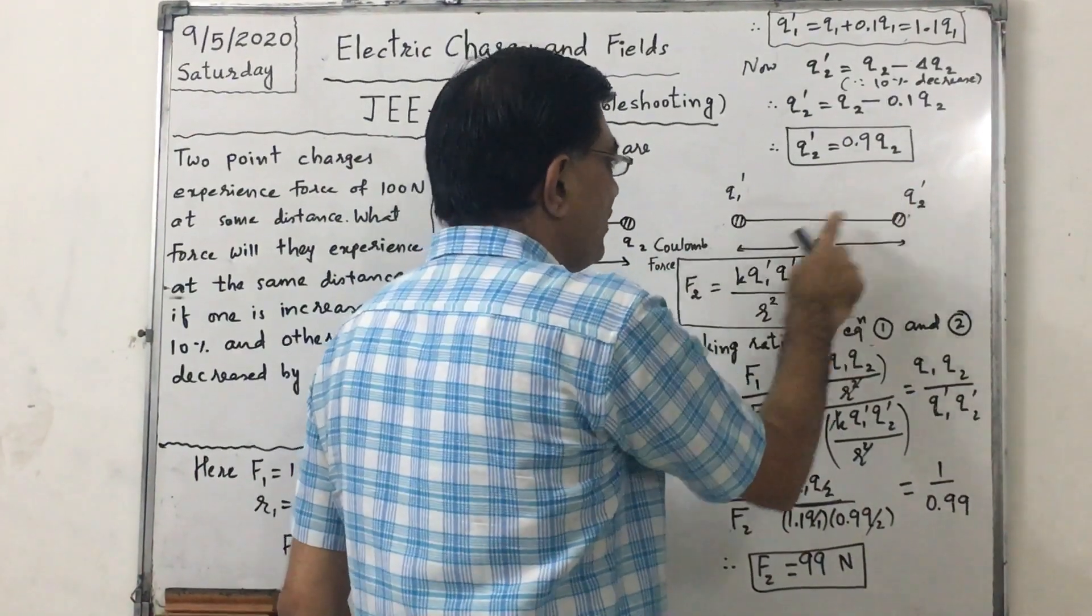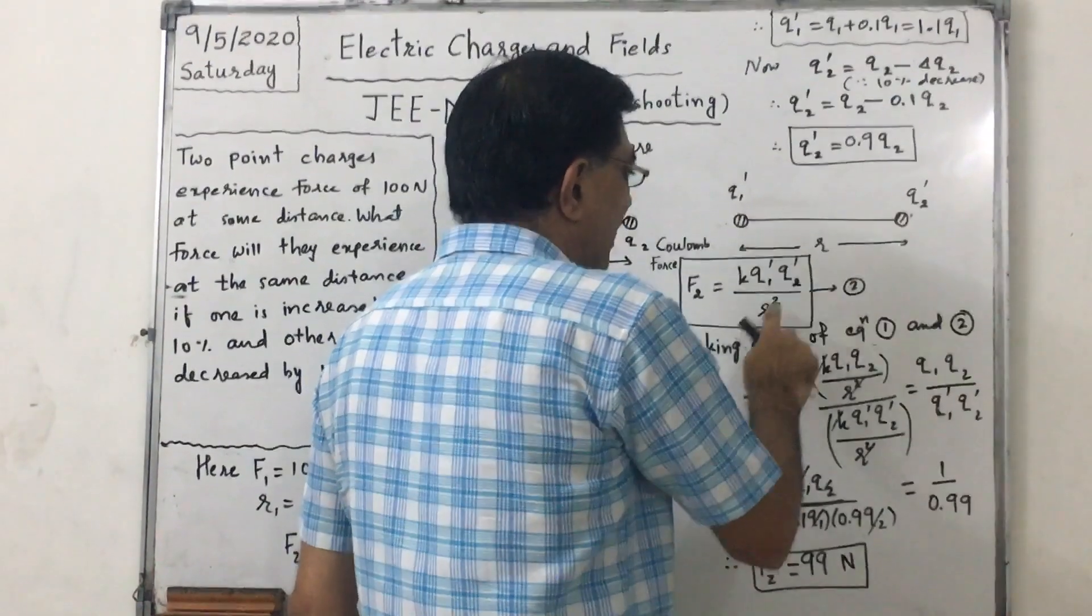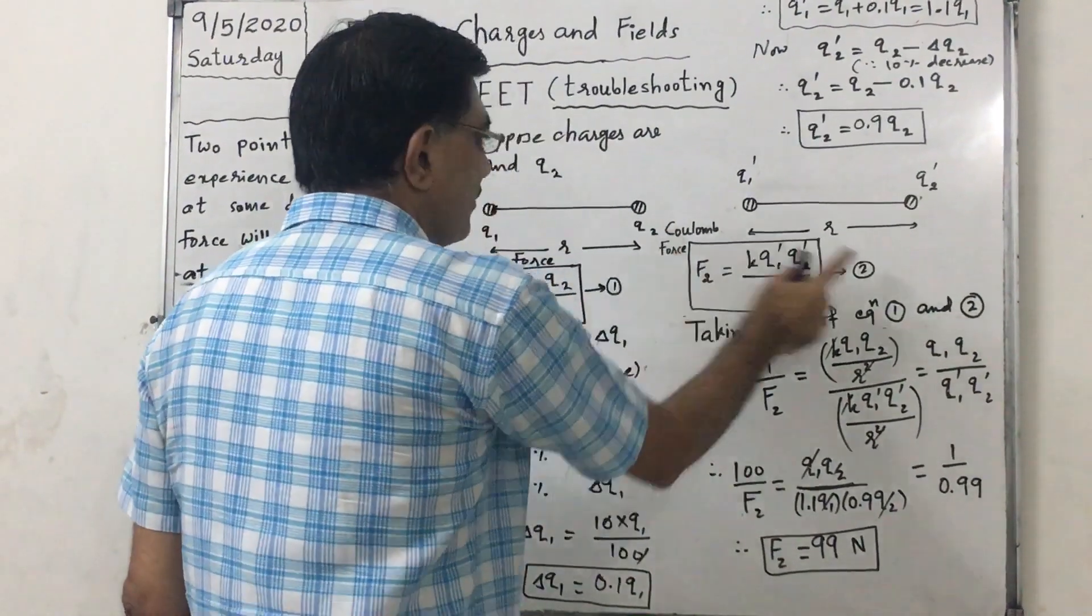Distance is the same. F2 equals K Q1 dash Q2 dash upon R squared. Taking the ratio of equations 1 and 2.